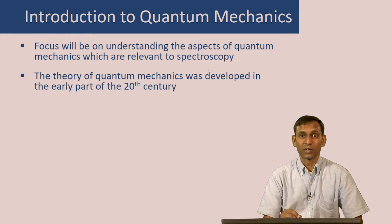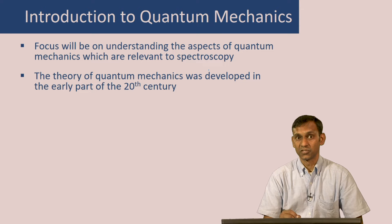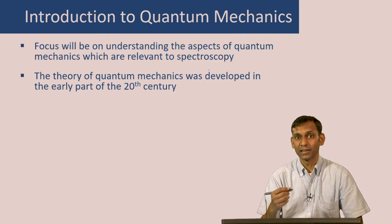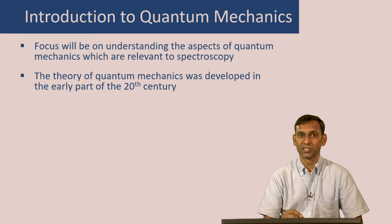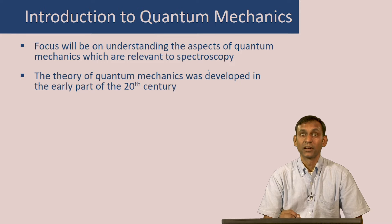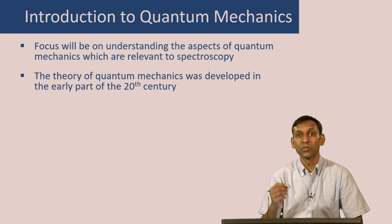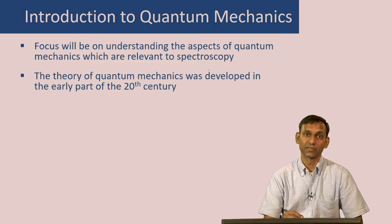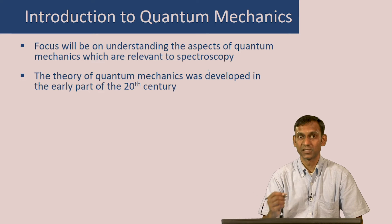This theory of quantum mechanics was developed in the early part of the 20th century, about 100 years back. Before that, in the late part of the 19th century, there were certain experiments like blackbody radiation, the photoelectric effect, and the discrete spectrum of atoms like hydrogen, which could not be explained by the existing theory of that time. And that prompted the development of this theory.